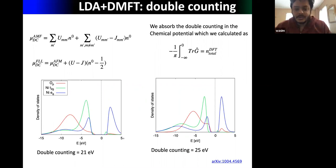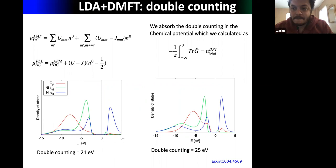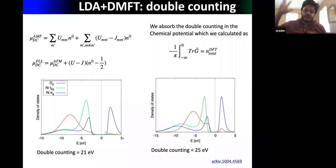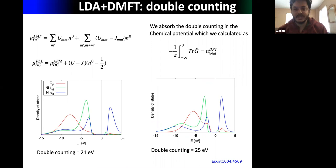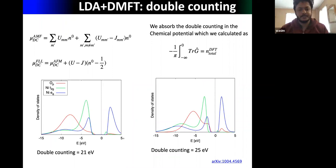Another important issue is double counting. When doing DFT, we already put some interaction into the exchange-correlation functional, and then we put interactions again in DMFT — so there is double counting and we have to subtract that contribution. This issue is not new to LDA+DMFT since it already exists in LDA+U, where two popular schemes were developed: Around Mean Field (AMF) and Fully Localized Limit (FLL). These have been adopted for LDA+DMFT as well.